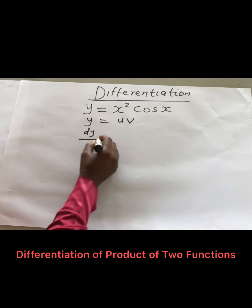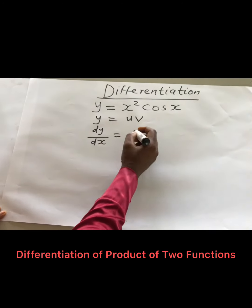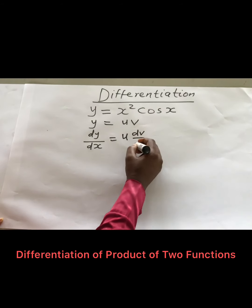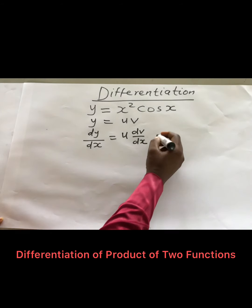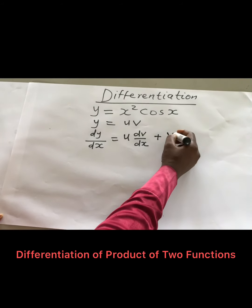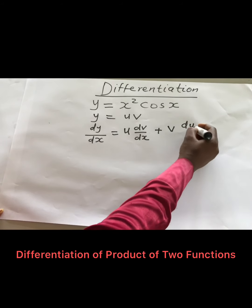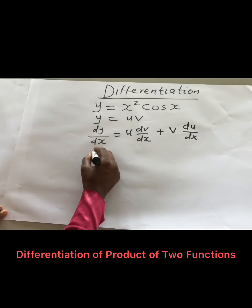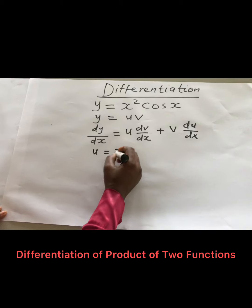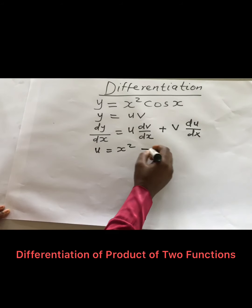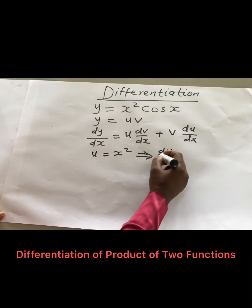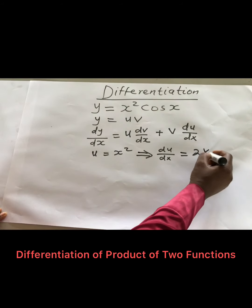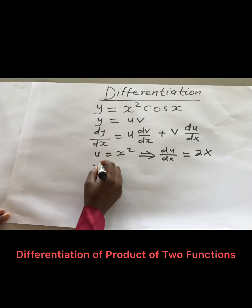So dy/dx will be U times the derivative of V, plus V times the derivative of U. Let's say that my U is the quadratic function — so U equals X squared — then if I take the derivative of U, I will have 2X.